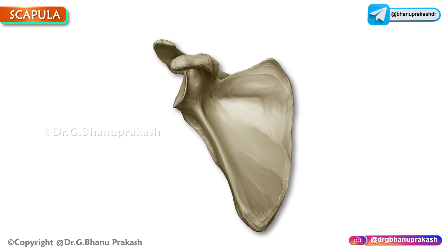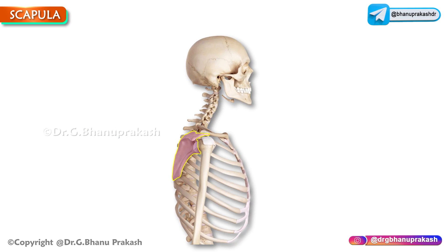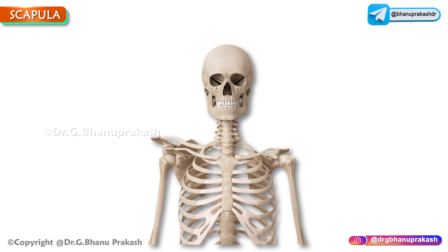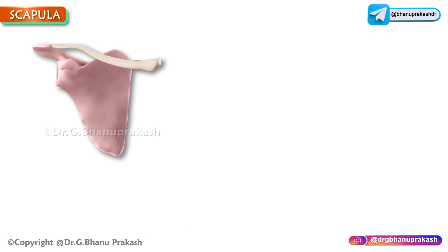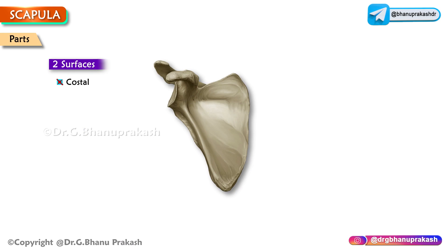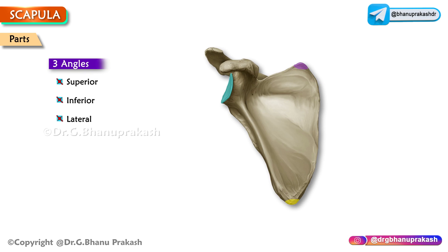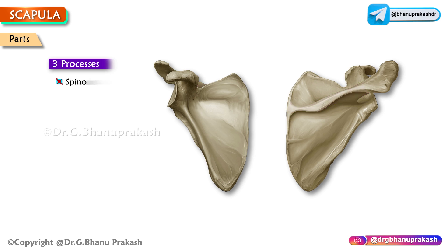The scapula is a large, flat, triangular bone in the posterior lateral part of the chest wall. It lies opposite the second to seventh ribs and takes part in the formation of the shoulder girdle. It presents with two surfaces — costal and dorsal — three borders: lateral, medial and upper; three angles: superior, inferior and lateral; and three processes: spinous, acromion and coracoid.